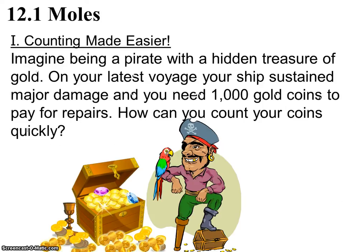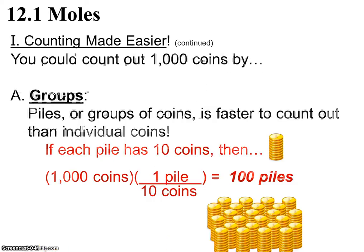So let's pretend that we are pirates, and we need to count something really quickly. So imagine we have a hidden treasure, and we need to count out 1,000 gold coins from our treasure. How can we count them very quickly? Well, you could have all of your mateys count them really quick, or you could do it in an organized way, and you could put them in groups. So you can make piles of coins, such as piles of 10.